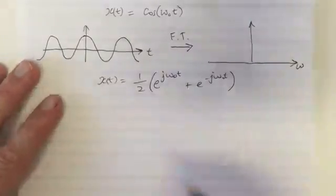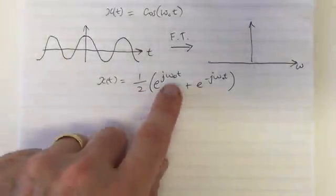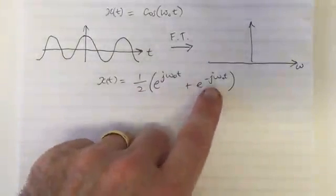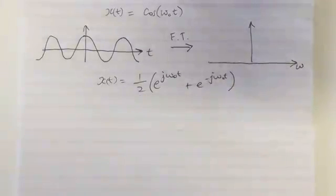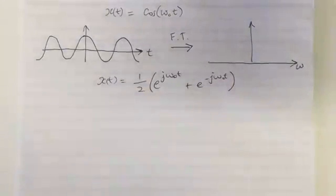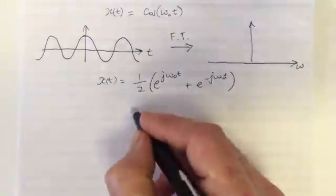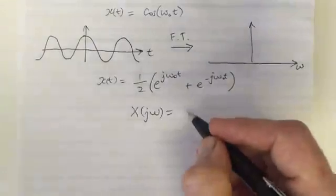This means the Fourier series coefficients are 1/2 at k=1 and 1/2 at k=-1. For a periodic waveform, the Fourier transform has the following form: X(jω) for a periodic signal